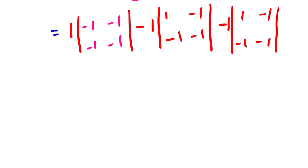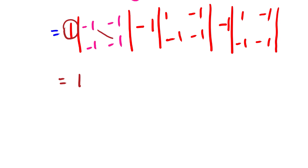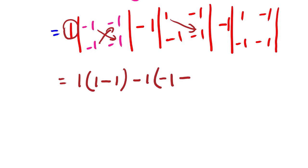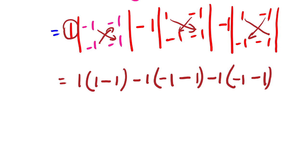From here we can quickly solve this. For each 2×2 matrix, the determinant is the product of the main diagonal minus the product of the other diagonal. For the first: (-1)×(-1) = 1, minus (-1)×(-1) = 1, giving 1 - 1 = 0. For the second: (1)×(-1) = -1, minus (1)×(-1) = -1, giving -1 - (-1) = 0. For the third: (-1)×(-1) = 1, which gives -1 after the sign, then minus (1)×(-1) = -1.